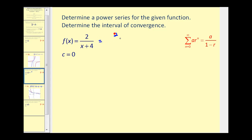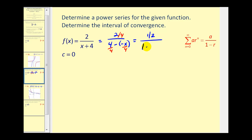We can rewrite 2/(4+x) as two divided by four minus a negative x — these are still equal. Next, we need one minus r in the denominator, so we divide everything by four. The numerator becomes one-half, and the denominator becomes one minus negative x over four. In this form, we can identify a, the first term, as one-half, and r as negative x over four.